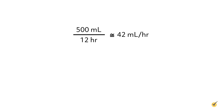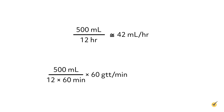The drops per minute would be calculated as total volume divided by time in minutes, multiplied by the drop factor of 60 drops per milliliter, which also equals 41.6, rounded to 42 drops per minute — confirming the tip.